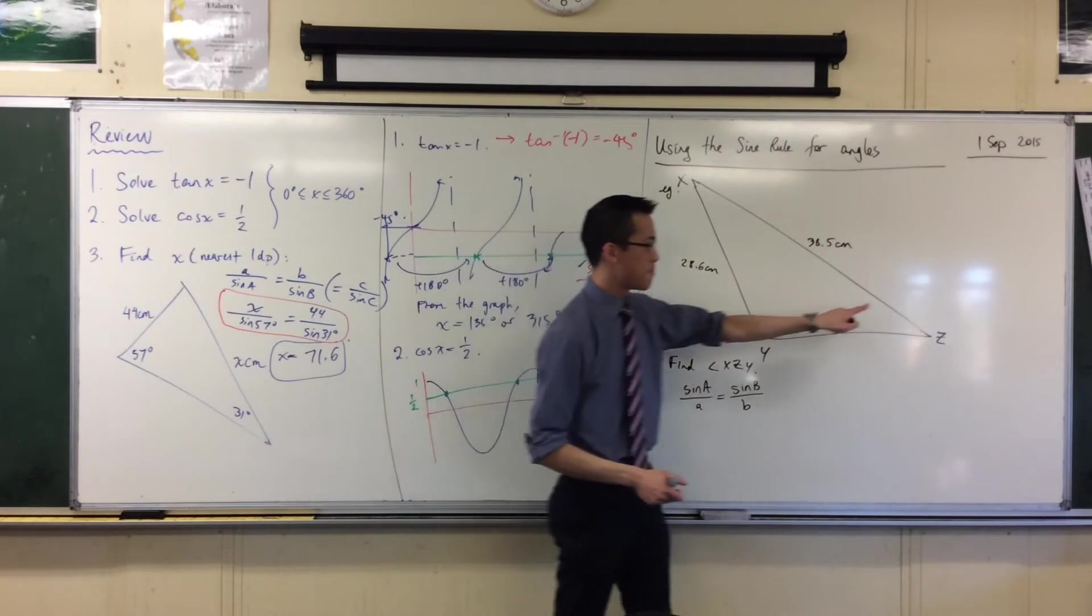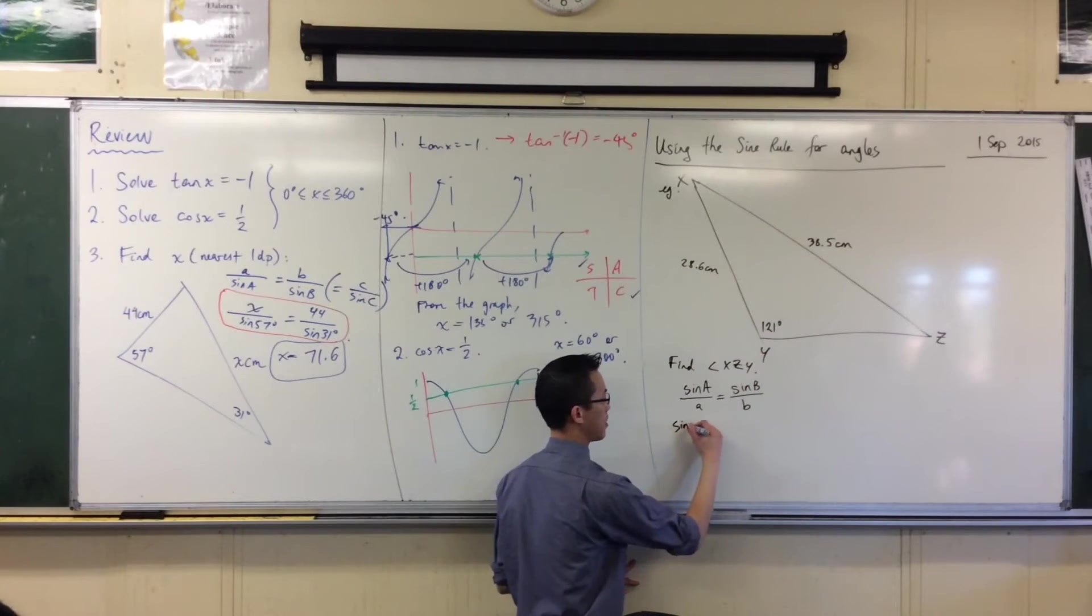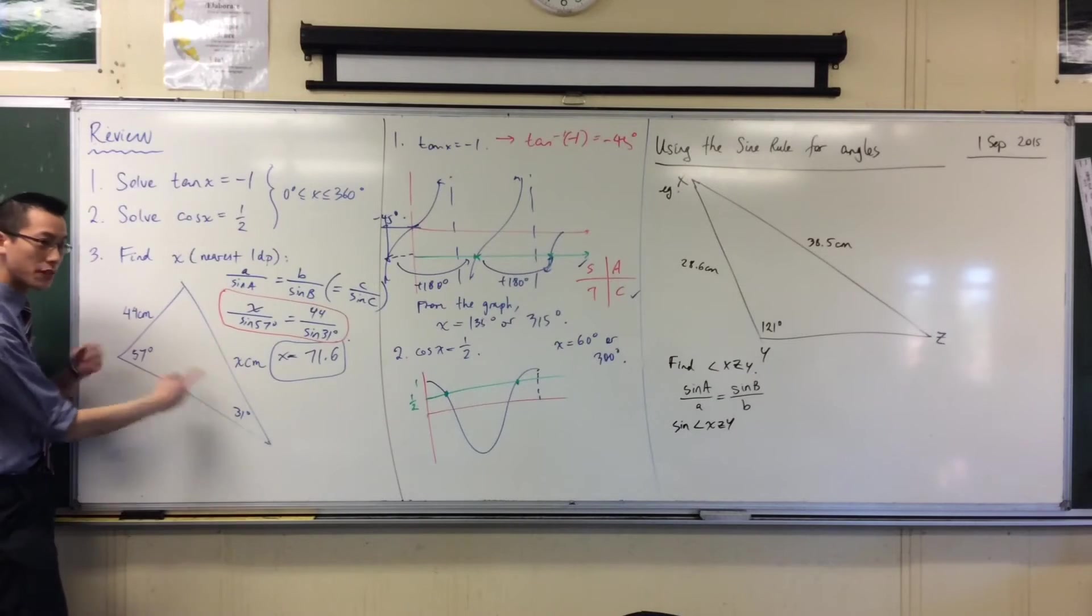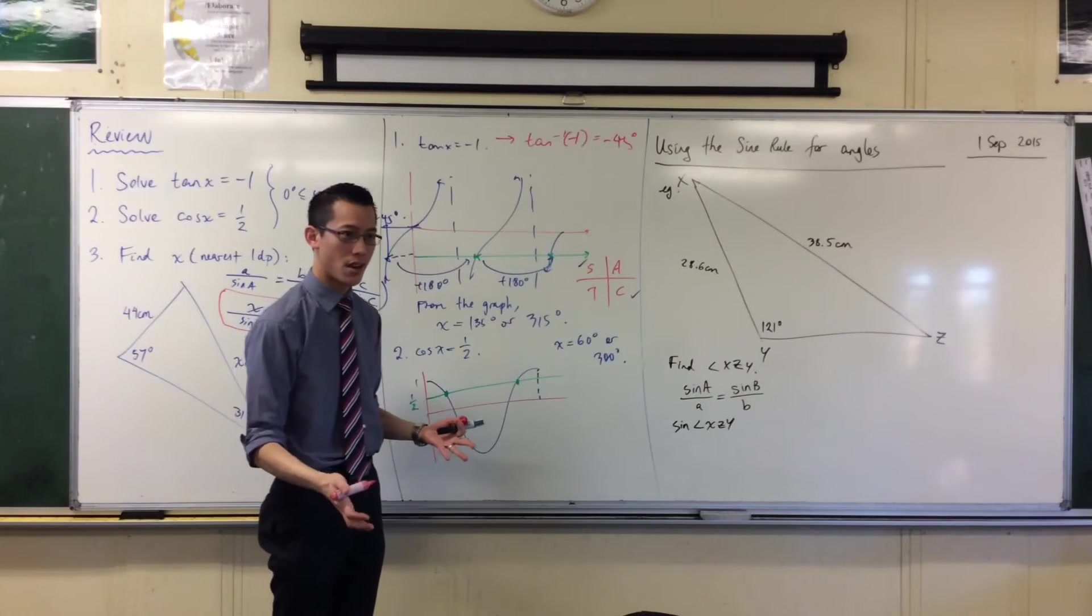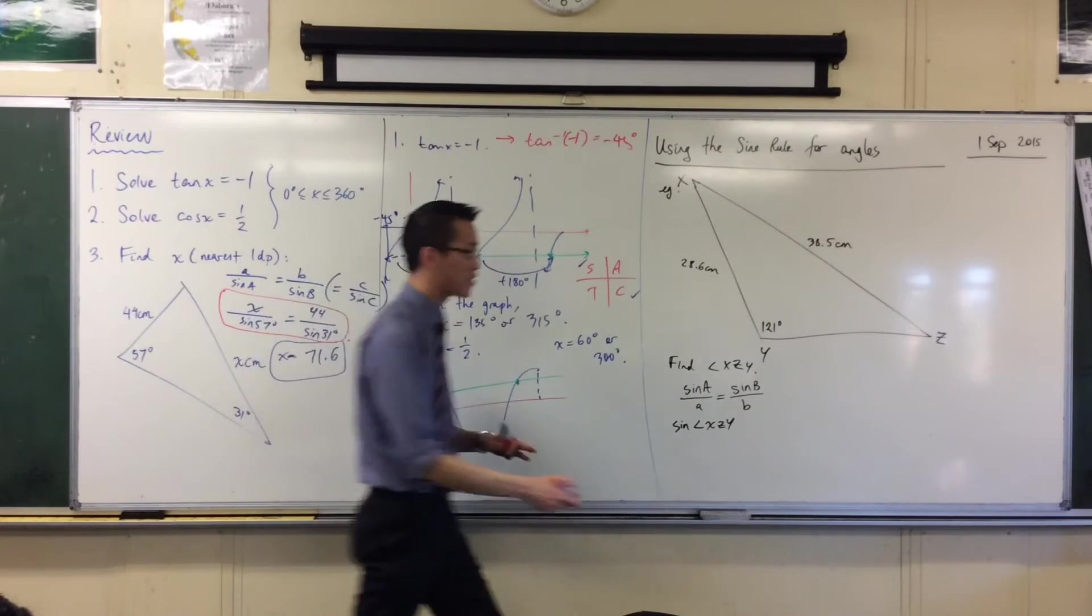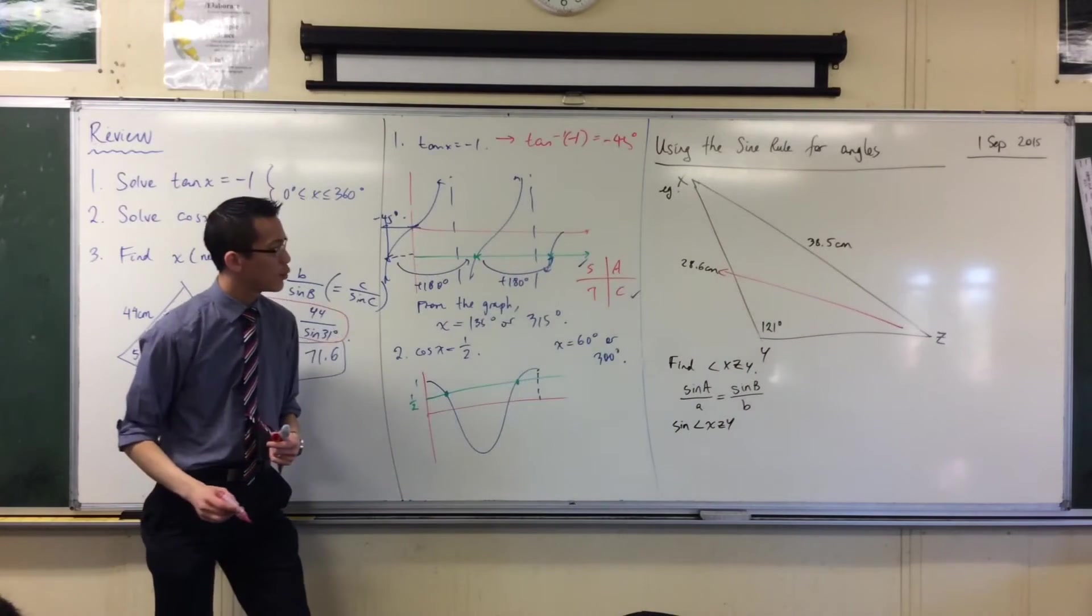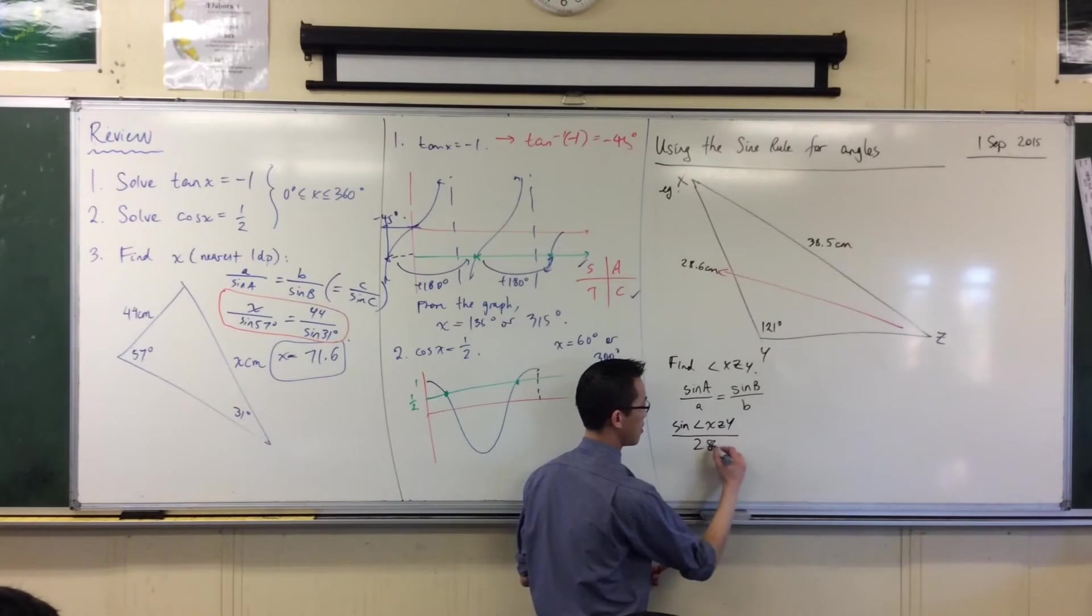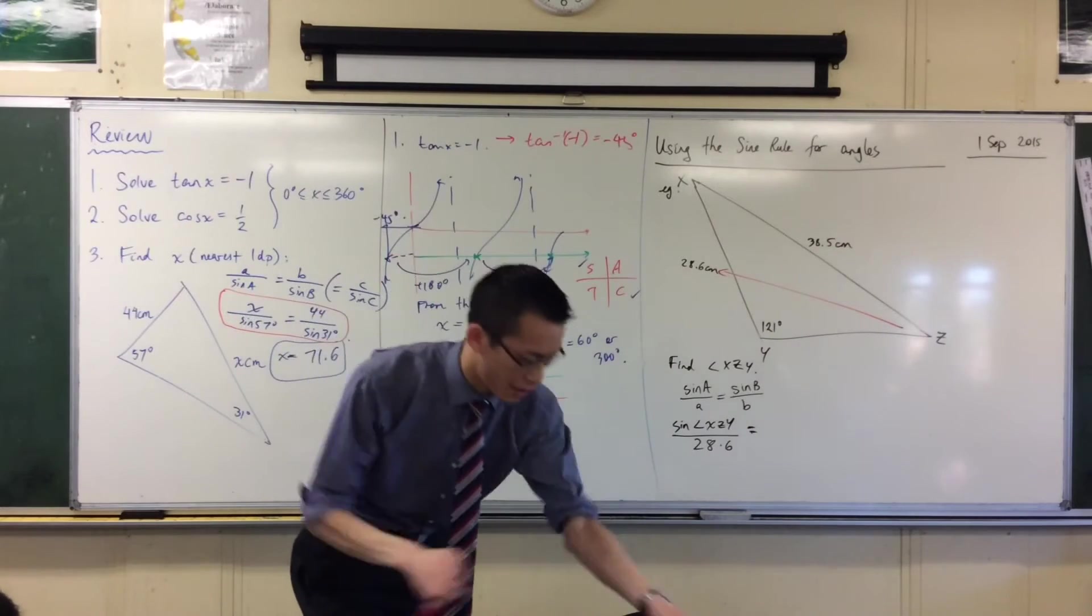So sine A, that'll be this angle that I want, XZY. So I'm going to write sine of XZY. And just like before, I'm going to match up opposite features. If it helps you, use another colour and literally draw across the lines, arrows to match up angles with their opposite side. You see that? Angle with the denominator over here. And once I move on to the right hand side, I need the other pair. So I will get another colour.